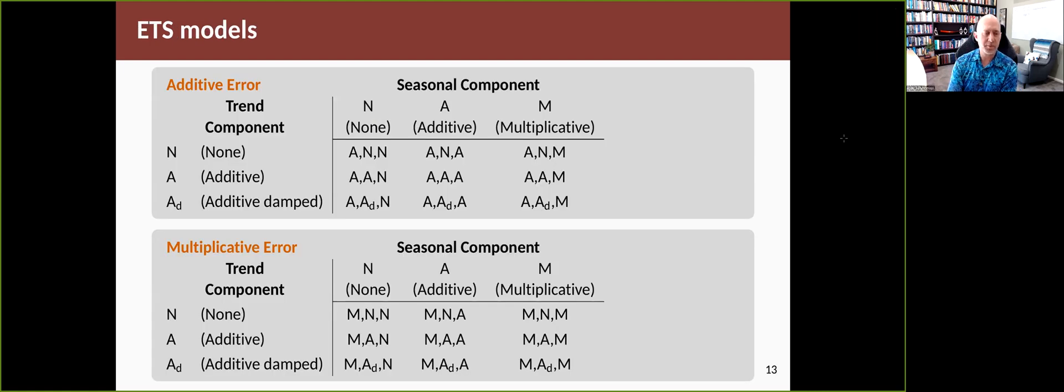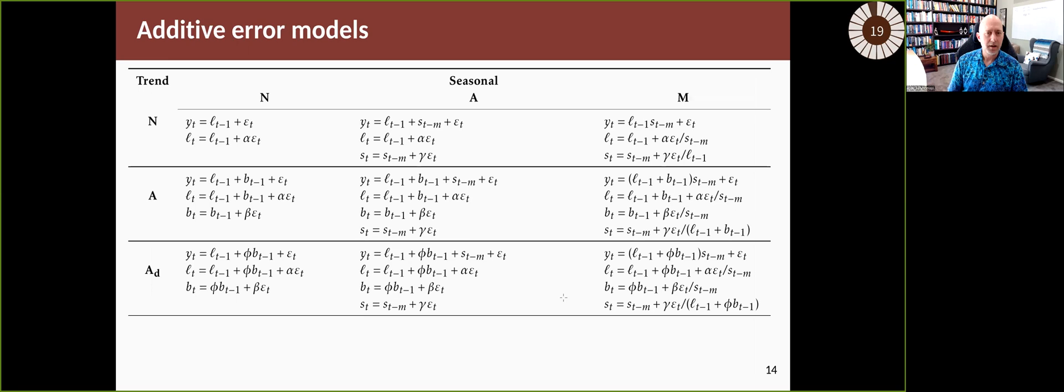So we end up with these set of models. Now, instead of the nine models when we had three types of trend and three types of seasonality, when you then multiply up by the two types of error, we now have 18 models, two times three times three. And you can write them out in a set of two tables like this. It turns out that some of these models are not actually particularly useful. They're numerically unstable. And so some of these models we're not going to use. In particular, we're not going to use models that have certain combinations of multiplicative, some multiplicative and some additive components.